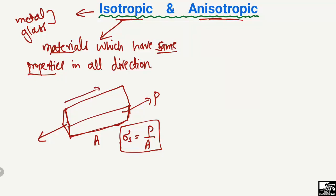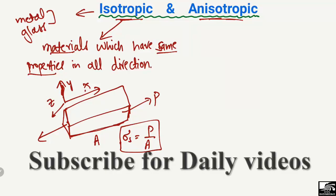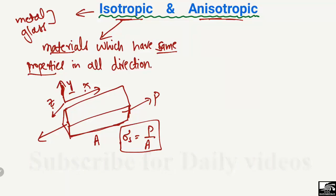If this is the x-axis of the material, and this is the y-axis, and this is the z-axis — in the x-axis we will have the same strength as in the y-axis and also in the z-axis. The material strength remains the same in all directions, so it is known as an isotropic material.